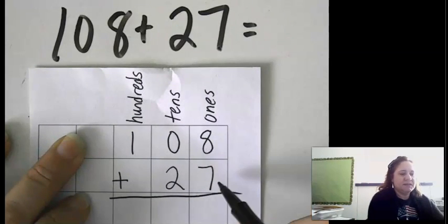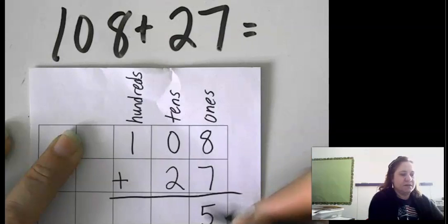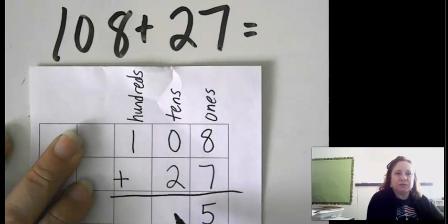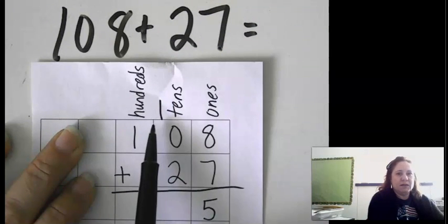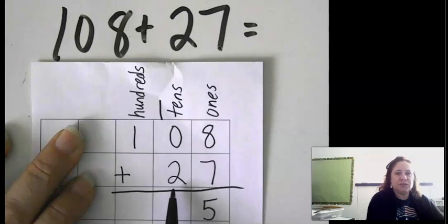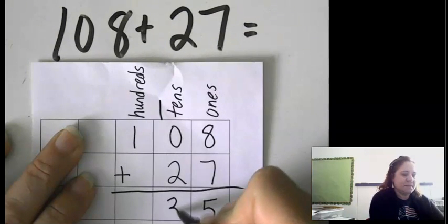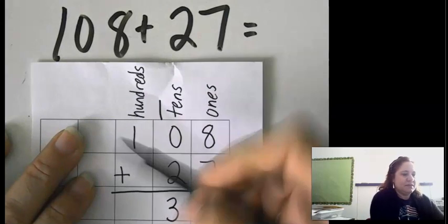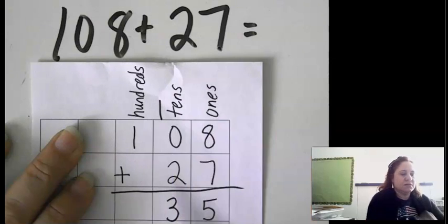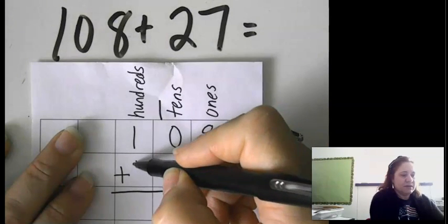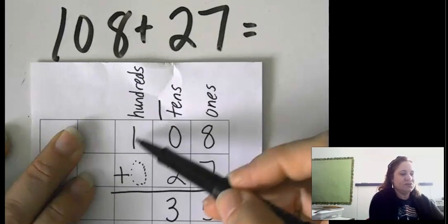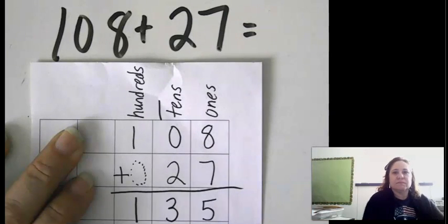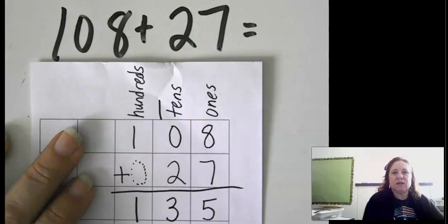8 plus 7 is 15. So I'm going to put the 5 here. I can't put the 1 here. It will be in the way, so I'm going to put it at the top. So now I have 1 ten plus 0 tens plus 2 tens, so I have 3 tens. And then this 1, well, there's nothing here. So I can either put a 0 here and do 0 plus 1, or I can just drop that 1 straight down. So our answer is 135.